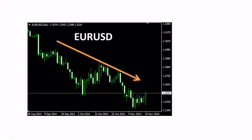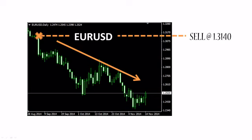Well, there's a trend and a bearish trader would enter somewhere over there where we see the X on the top left. He would sell at about 1.3140, meaning that every one Euro is worth 1.3140 US dollars. And then he would close the transaction at about 1.2480, meaning that at that point in time, every Euro is worth only 1.2480 US dollars.